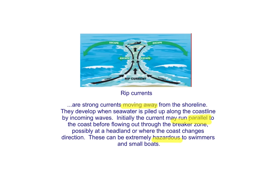Rip currents are another key bit of terminology. These are strong currents that move away from the shoreline, as this diagram here is showing you. To be honest, you wouldn't want to be a swimmer or in a small boat, because to be trapped between these two rip currents would be extremely hazardous.